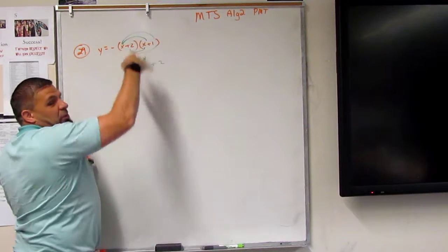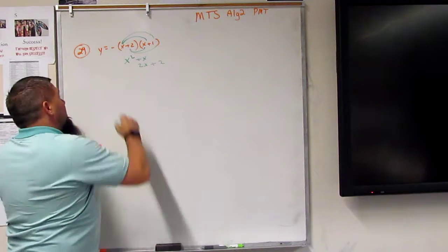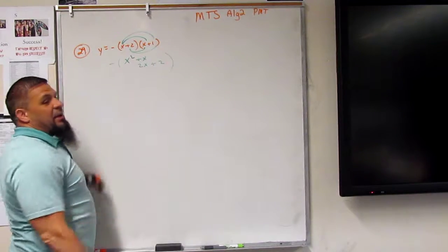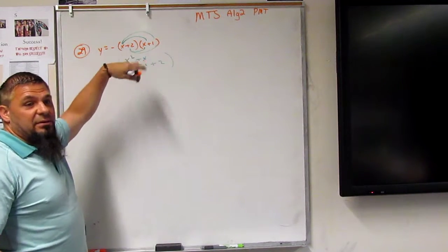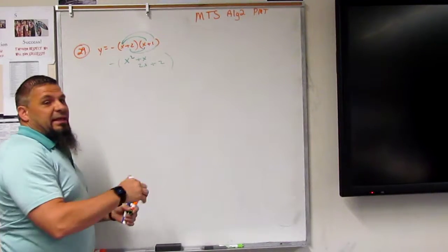Now all of this gets multiplied by a negative. So later on, we're going to multiply that by a negative because it says negative times this, right? So we'll worry about that later.